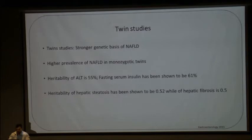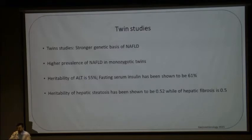Twin studies have been shown to predict a stronger genetic basis for NAFLD. Higher prevalence of NAFLD is noted in monozygotic twins. Heritability of ALT has been shown to be 55%, and that of fasting serum insulin has been shown to be 61%. The heritability of steatosis has been shown to be 0.52, while that of fibrosis is 0.5.